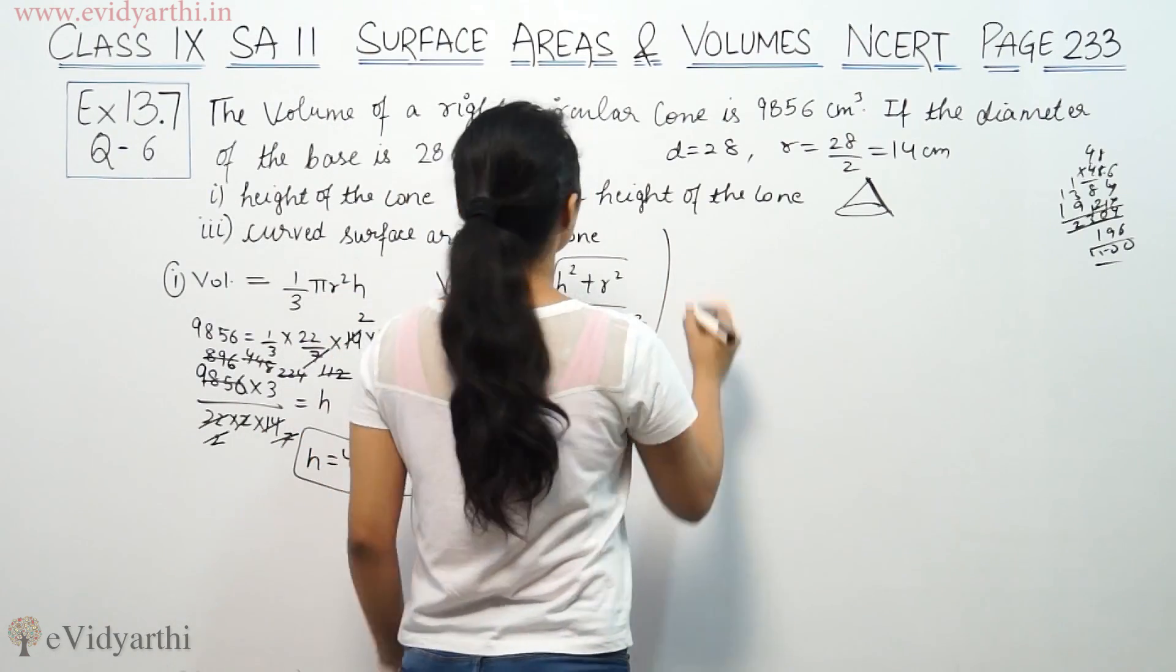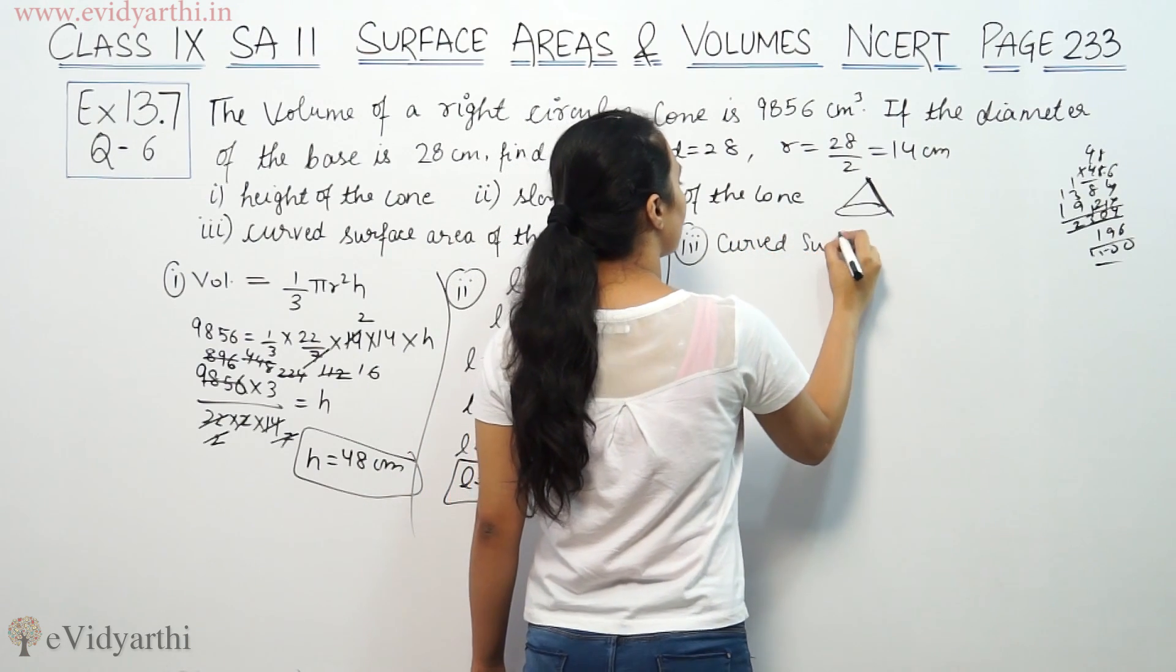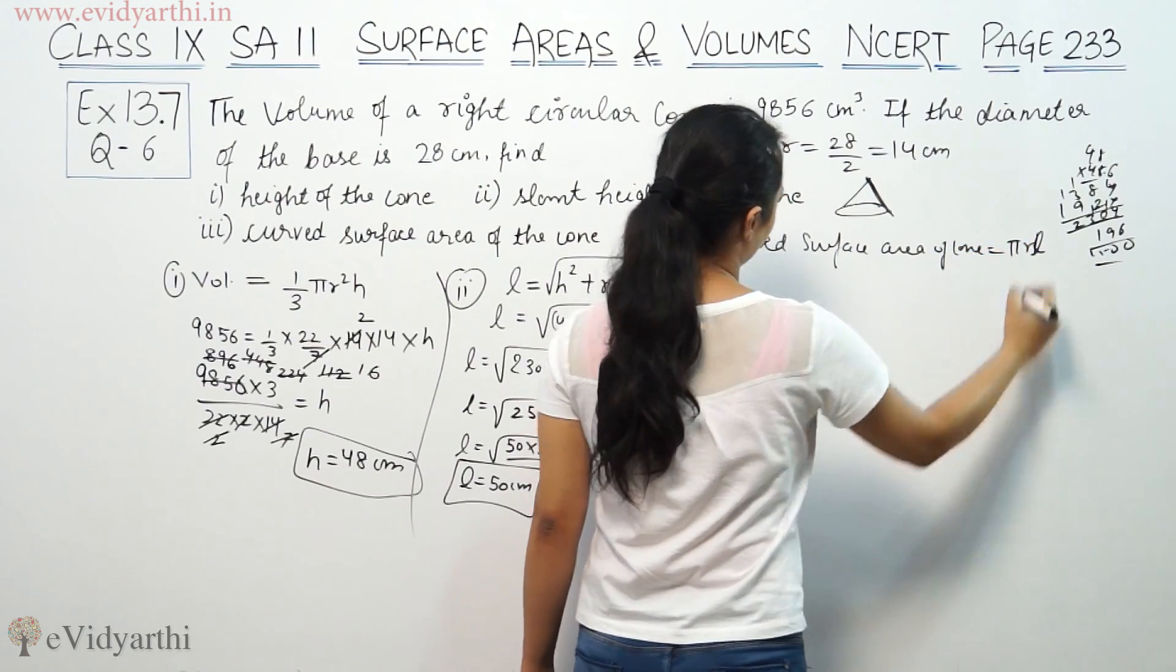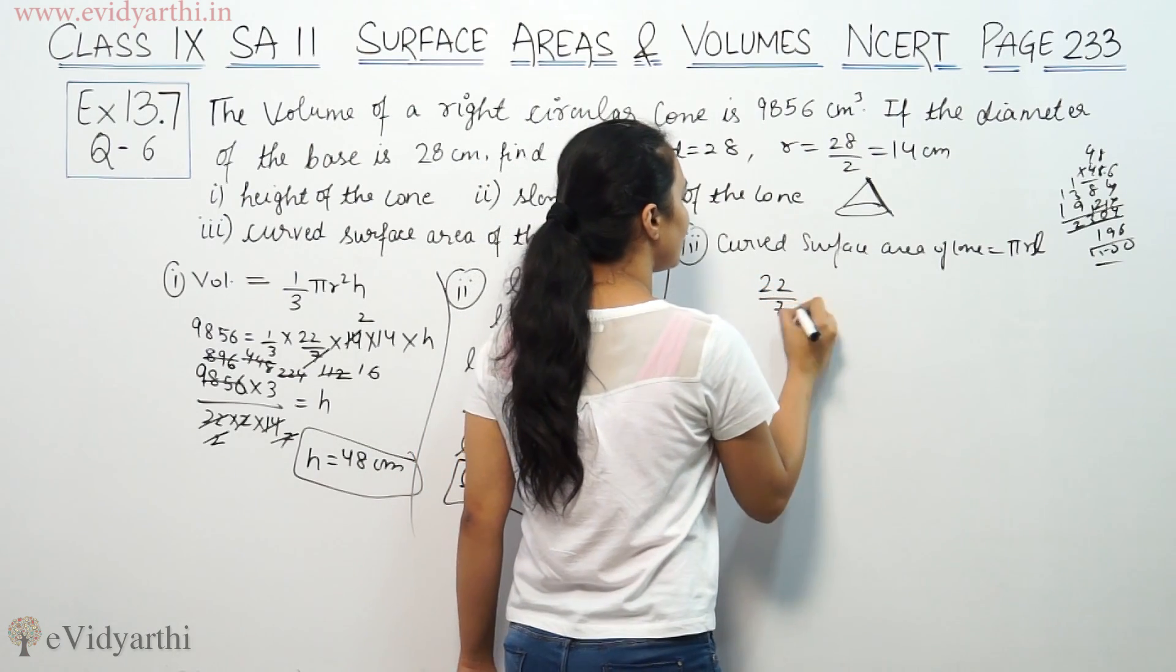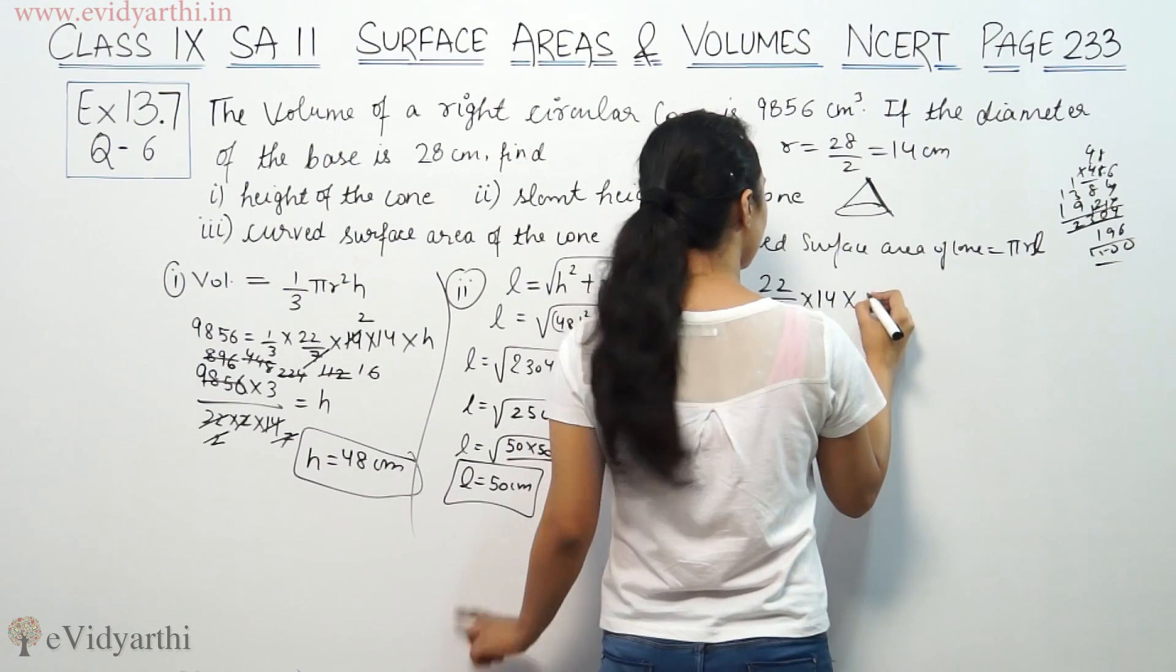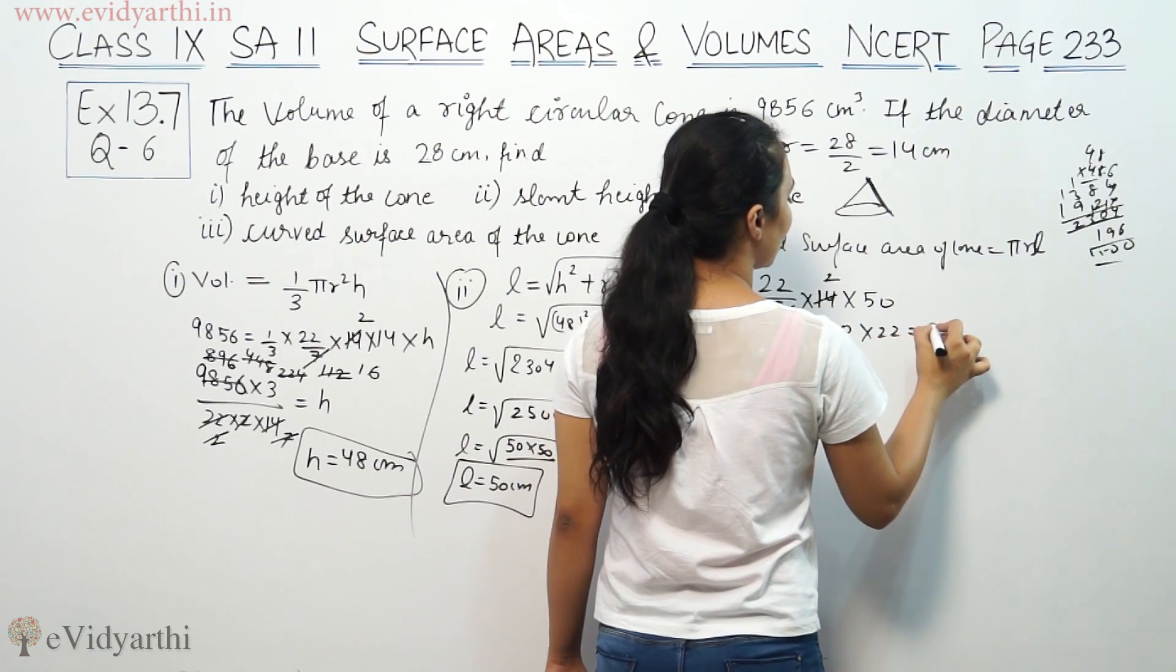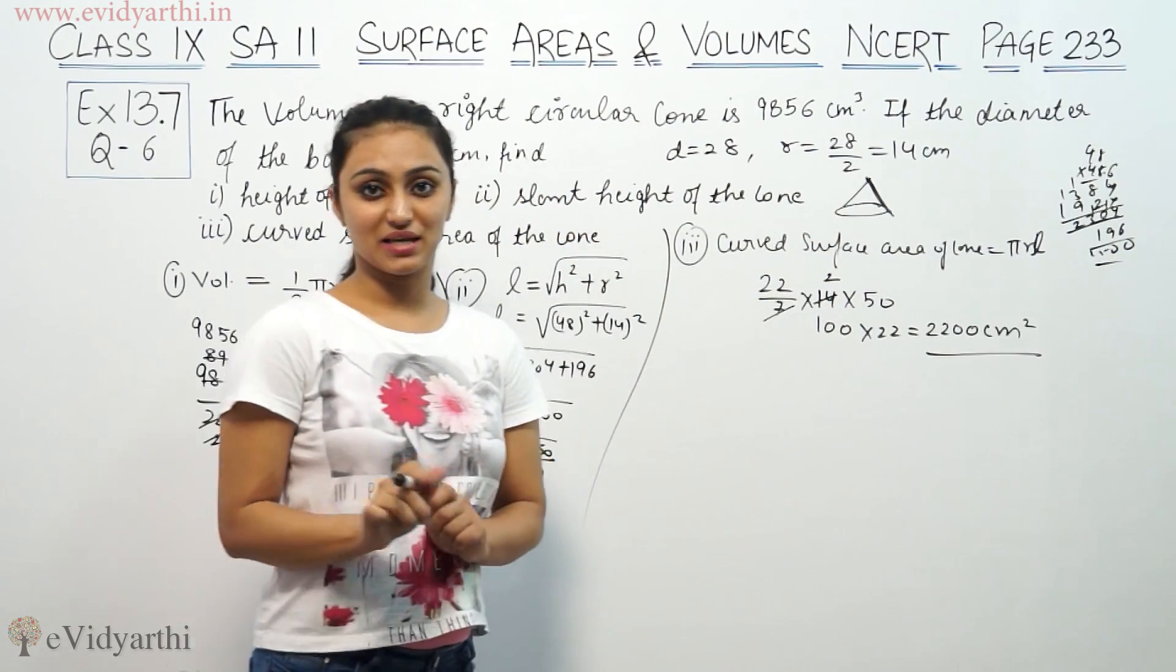Third part, curved surface area of cone. Curved surface area of cone is equal to πrL. So π = 22/7, radius is 14 and slant height is 50. 50 × 2 is 100 × 22, that means 2200 centimeters square. So this is the curved surface area.